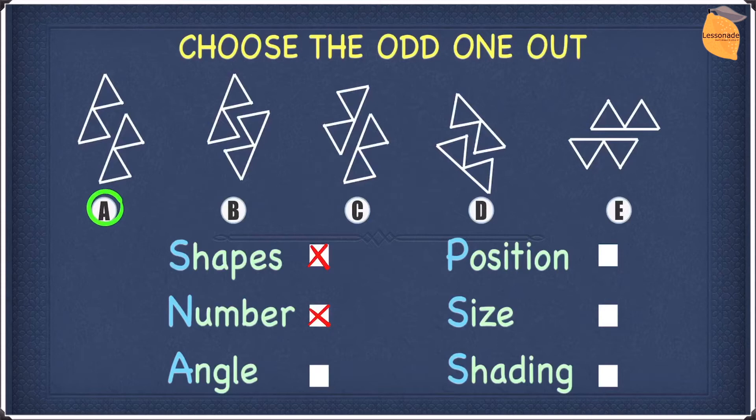Because only in A, we have both shapes that point in the same direction. However, for the rest, they all point in the opposite direction. So we can safely say our answer to this question is A. So I hope you guys understood everything so far. Now, let's go on to the next one.